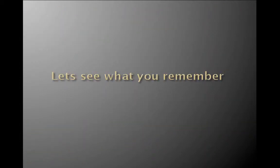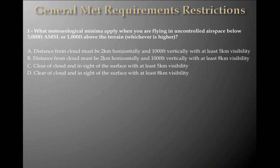So you are able to operate in meteorological conditions less than those in Tables 4 and 5 when within controlled airspace only, when operating under special VFR. Under special VFR you must still have a ceiling of 600 feet and visibility of 1,500 metres. The restrictions are: comply with ATC clearances and instructions; the aircraft must have two-way radio communicating with ATC; this can only be during the day; and you must remain clear of cloud. Sample exam question: what meteorological minima apply when flying in uncontrolled airspace below 3,000 feet AMSL or 1,000 feet above terrain, whichever is higher? Options include 2K horizontal, 1,000 feet vertical, 5K visibility; or 2K horizontal, 1,000 feet vertical, 8K visibility; or clear of cloud in sight of surface, 5K visibility; or clear of cloud in sight of surface, 8K visibility.